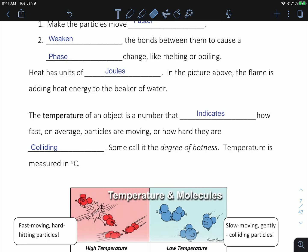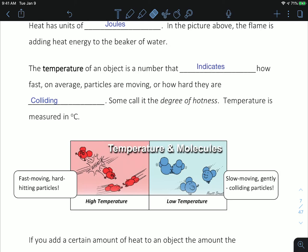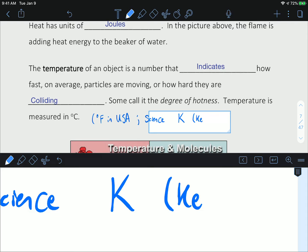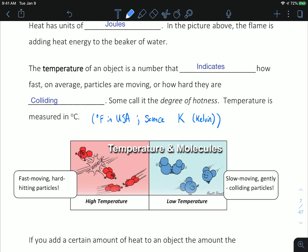Those water molecules are now moving faster, and those fast moving particles of water are going to give us an indication of a higher temperature. The temperature of an object is a number that indicates how fast on average particles are moving and how hard they are colliding. Some call it a degree of hotness. Temperature is measured in degrees Celsius, although there are other options. If you're watching the American news, you'll notice they use degrees Fahrenheit in the United States. In science we might use Kelvin, and that is an absolute scale, which means that at zero nothing is moving.